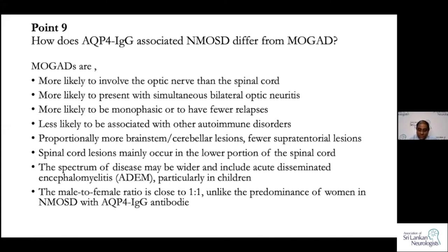In MOG disease, there are proportionately more brainstem and cerebellar lesions, with fewer supratentorial lesions. Spinal cord lesions may occur lower down in the lumbar or thoracolumbar region, whereas NMO lesions are mostly in the cervical and dorsal region. MOG patients can also present with encephalitis, encephalomyelitis, or an ADEM-like picture, with a more equal male-to-female ratio.